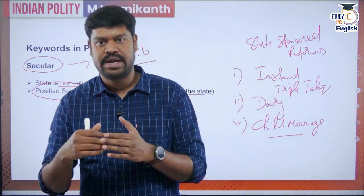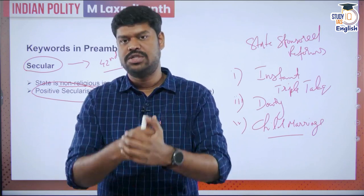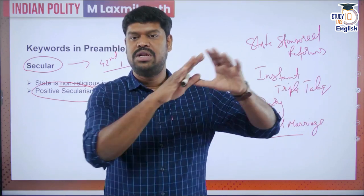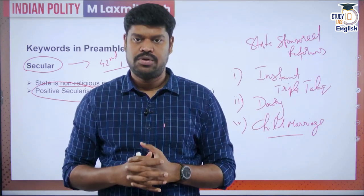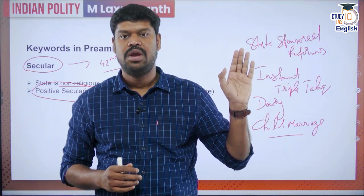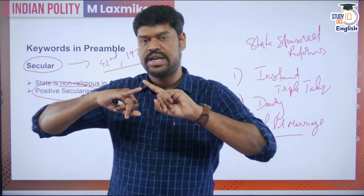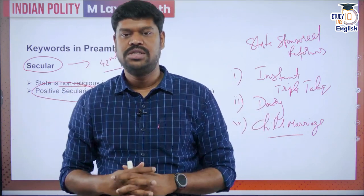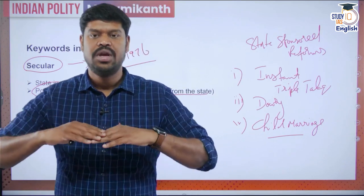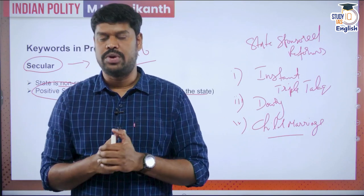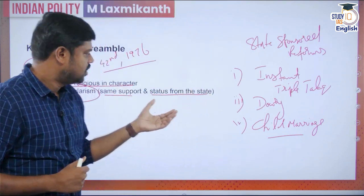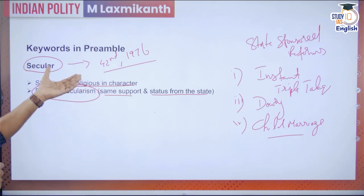Not only can the state intervene in matters of religion, it can also sponsor funds to religious institutions. For example, the governments of Uttar Pradesh and India gave aid to build the Ram Mandir in Uttar Pradesh. The state can provide aid to religious institutions, whereas in western countries, the state cannot use public money for a religious institution — that is strictly prohibited. In India, when aid is given to religious institutions, the aid must be given to all religions equally, not one religion alone.